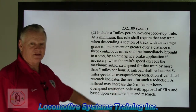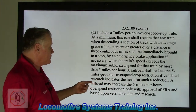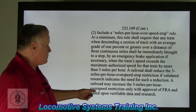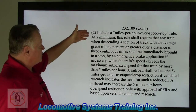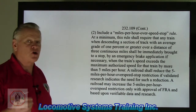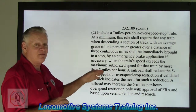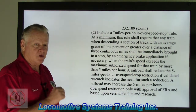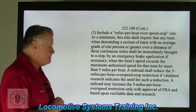What they're preventing here is a runaway freight train — that's the last thing you want. A railroad shall reduce the 5 miles-per-hour overspeed stop restriction if validated research indicates the need. A railroad may increase it only with FRA approval based on verifiable data and research. The point is to ensure that if dynamic braking cannot maintain that speed, the engineer is required to put that train in an emergency and stop it.